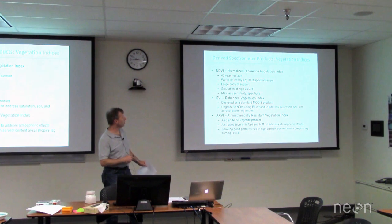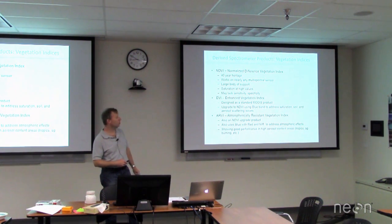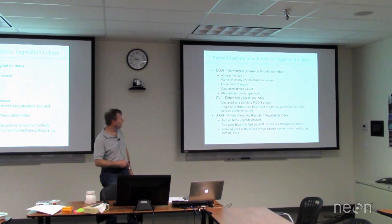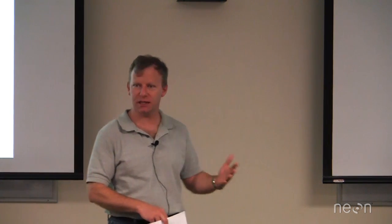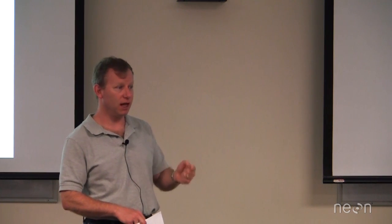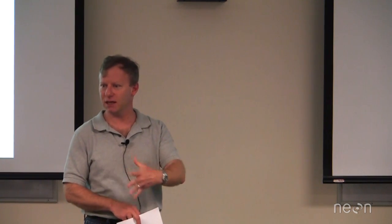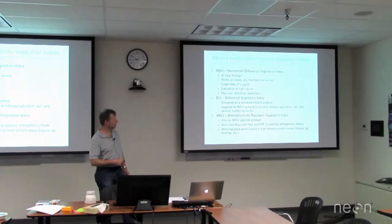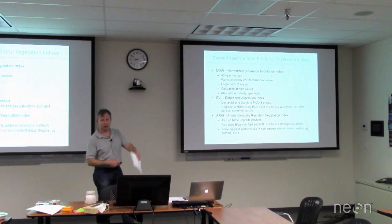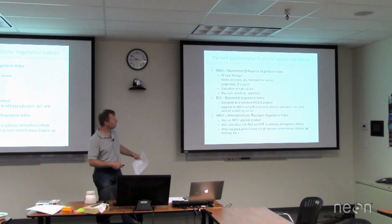Once people decided to improve on NDVI, everybody started to come up with their own indices. If you search vegetation indices through Google Scholar, you'll find literally dozens — 60, 70, 80, 90 different indices that somebody developed that works very well on their data set in their area. We've said, those are good and they might work in your study area, but as Courtney mentioned, we need it to work in all of our sites. So we've narrowed it down to about 11 spectral indices that do that.